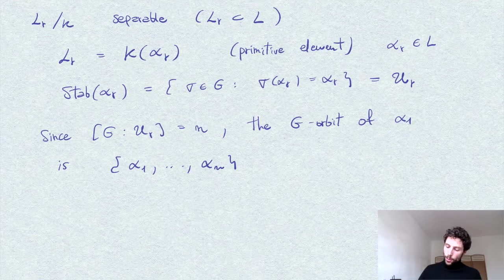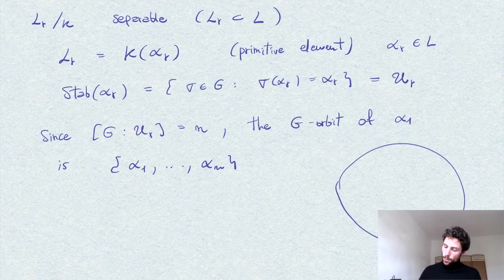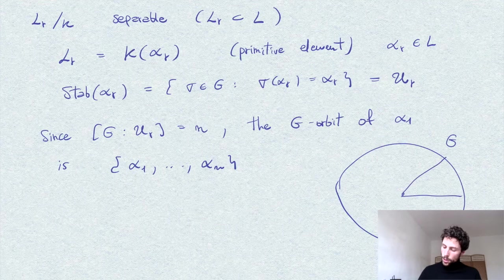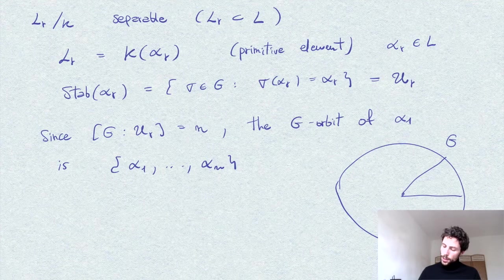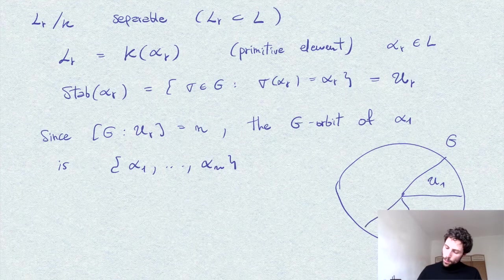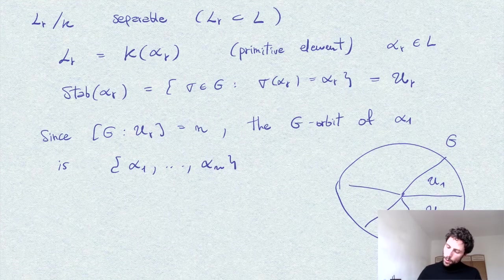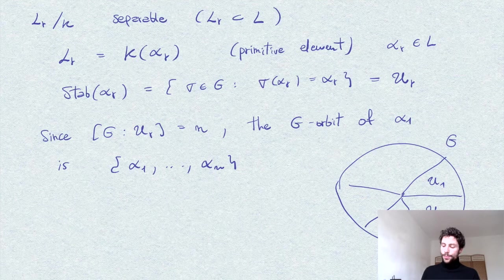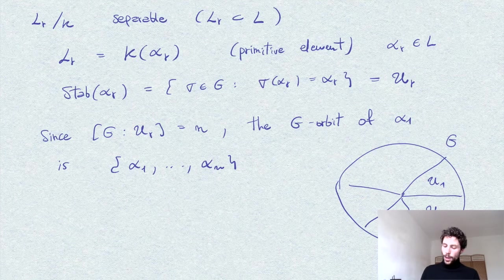So pictorially we have a situation, if this is G, of these joint groups, I mean they intersect at the identity and so on.